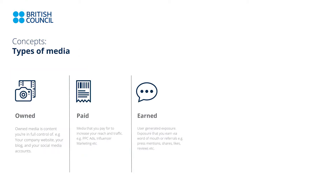Now let's talk about types of media. We have owned media, paid media, and earned media. Owned media is content that you are fully in control of — think about your company website, your blog, and your social media accounts. Things that you open, build, design, and have full admin access to control the kind of content and interaction that goes on. That's owned media.